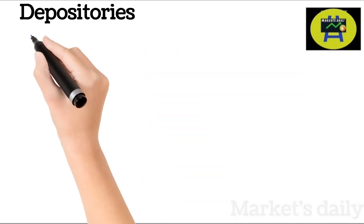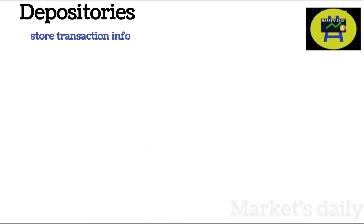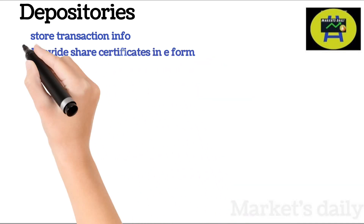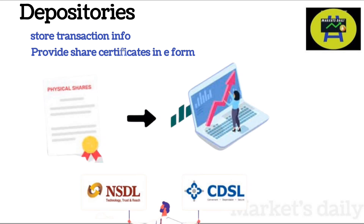Depositories. It is the place where all transaction records and information are stored. They interact with clients through DPs — that is, depository participants, also called stock brokers. For example, Ram buys 10 shares of Infosys and Sam sells 10 shares of Infosys — these transactions are stored in depositories as share certificates in electronic format. The depositories in India are NSDL and CDSL — NSDL stands for National Securities Depository Limited and CDSL stands for Central Depository Services Limited.